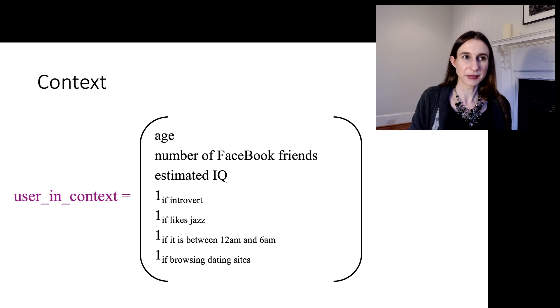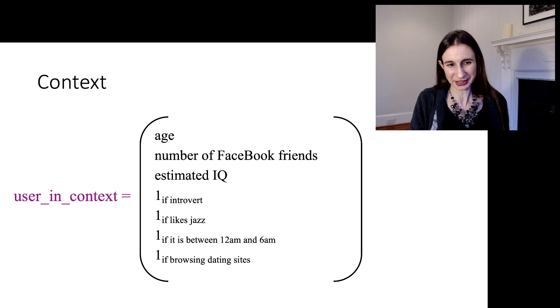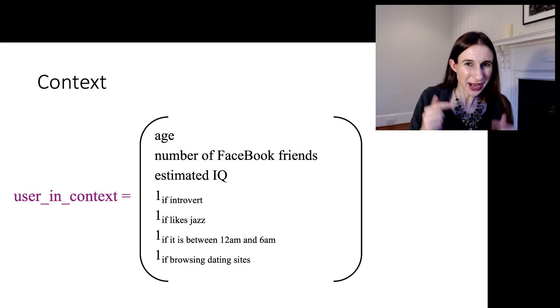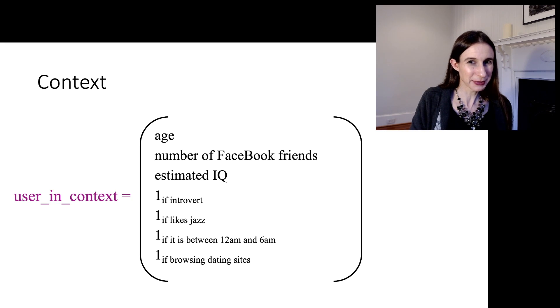So for instance, let's say that I'm trying to figure out which advertisement to give to a user on social media. Well, I can think about the context of the user. I know the user's age, I know the person's number of Facebook friends, their estimated IQ because maybe they took an IQ test and we got the results, or we can estimate their IQ from what they like. We also know if they're an introvert, if they like jazz, if it's between 12 a.m. and 6 a.m., one of their browsing dating sites. You might think this is all very private information, but if anyone's keeping track of what you actually do on the internet, this stuff is really easy to figure out. And that's the kind of information that they use about people to figure out what ad to show them.